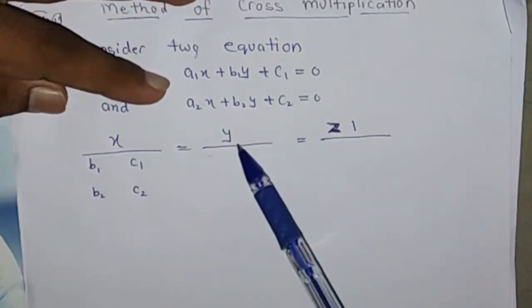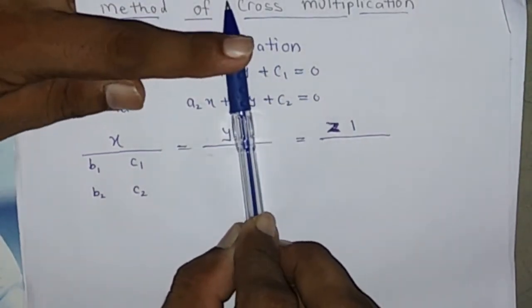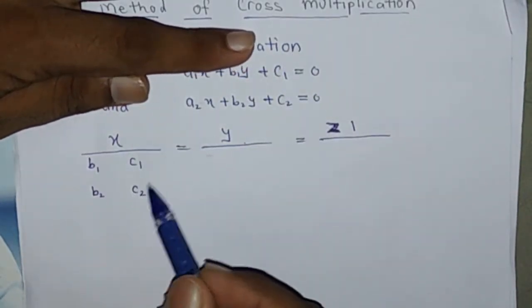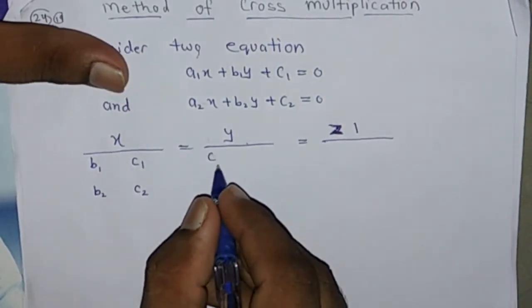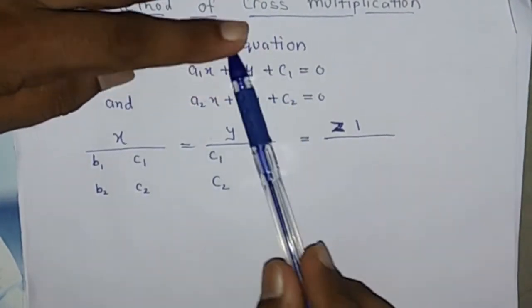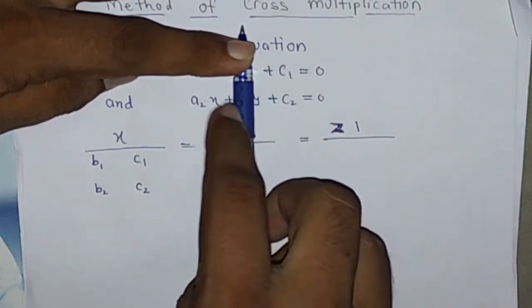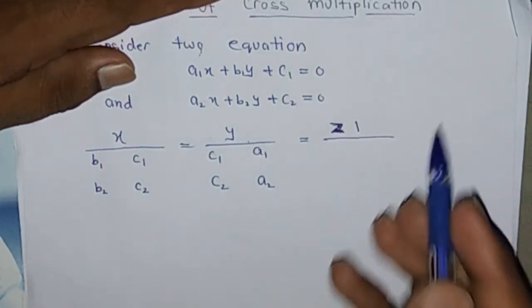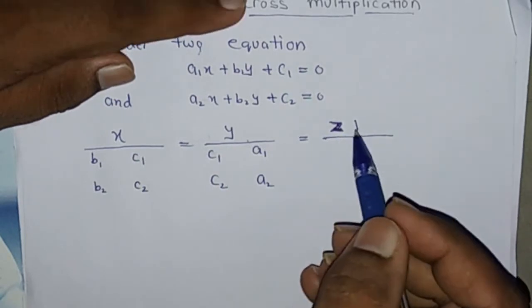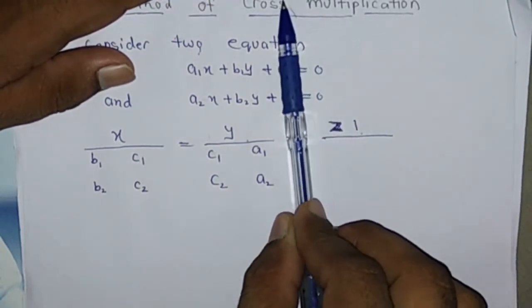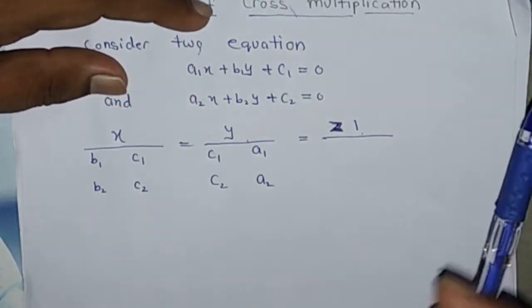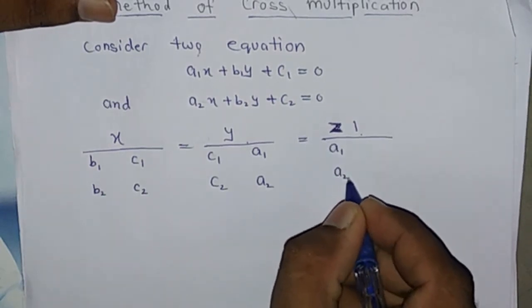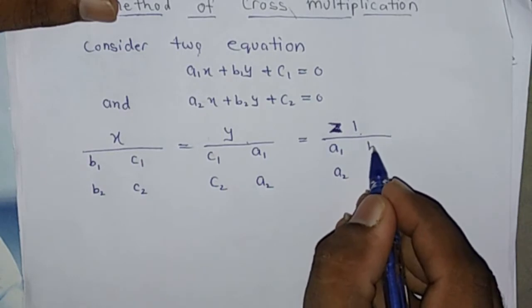Now for y we hide the term of y and put C1 C2, this term is repeated here, and A1 A2 means coefficient of x. And in the denominator of 1 we put coefficient of x, this term is repeated here A1 A2, and coefficient of y B1 B2.